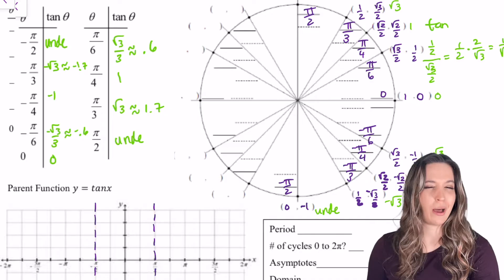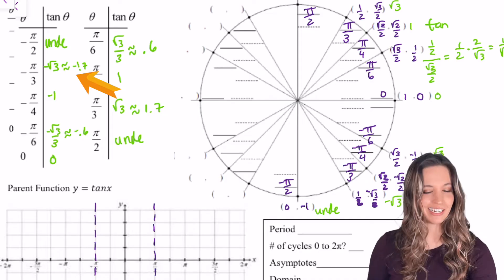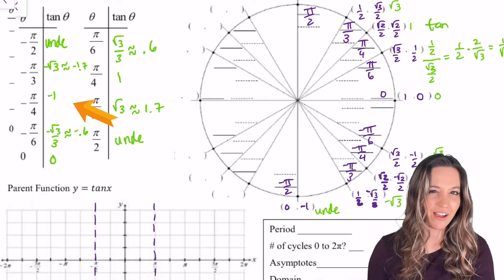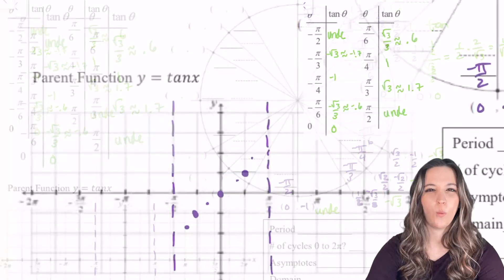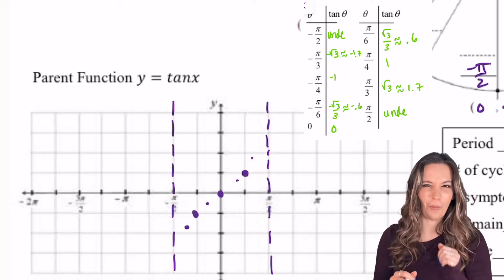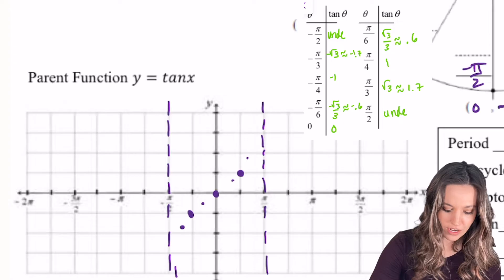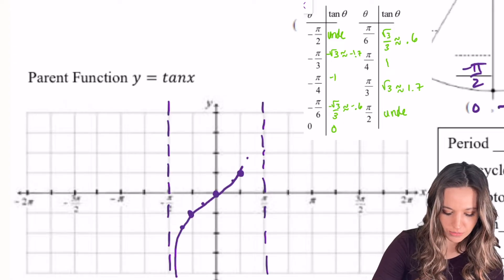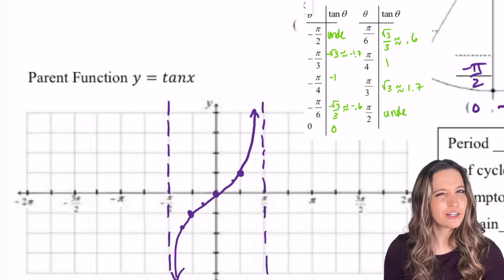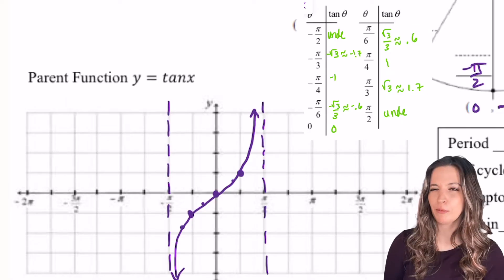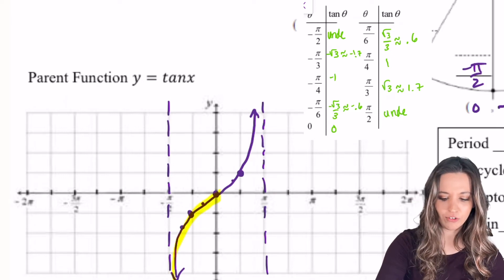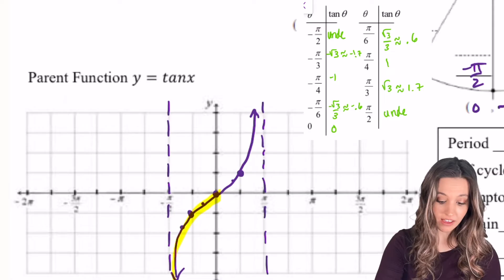Now I need to go to negative pi over 3. That's at negative root 3, about negative 1.7. So I'm going to do my best to graph that and the rest of the points. Once I've plotted all those points, you can see it almost looks like a little wiggle through the axis. We know that graphs like to follow the asymptotes. So there is one cycle of tangent. Make sure you're getting the right shape — from negative pi halves to 0, we should be clearly concave down, and from 0 to pi halves, we're concave up.